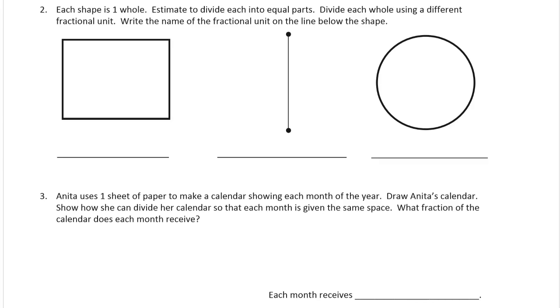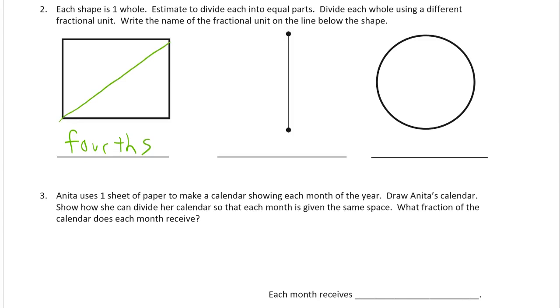So we have a rectangle here, and I'm going to make this into fourths by just going corner to corner. There's lots of different ways you can make up your own fractional unit here. You don't have to do fourths, and you don't have to do it the way I do it, even if you want to do fourths. So there's fourths, and that's four equal parts.